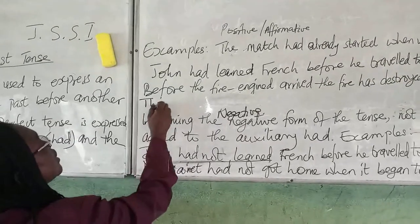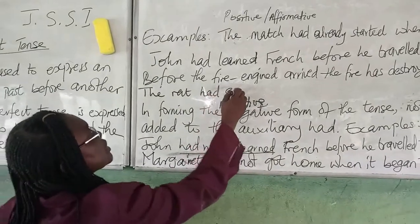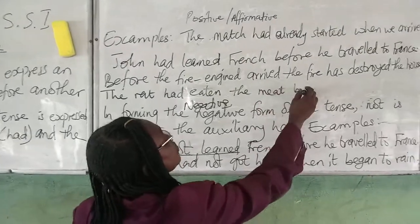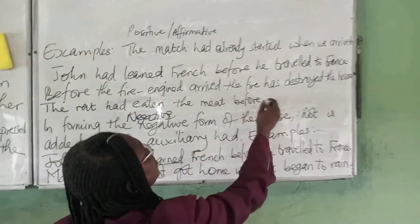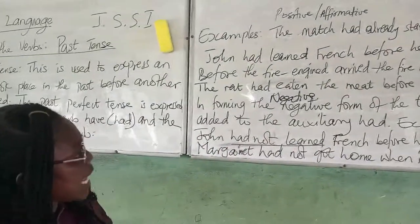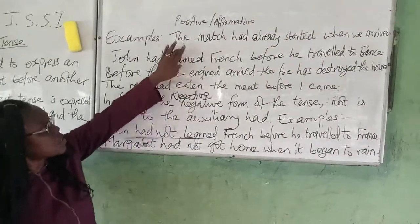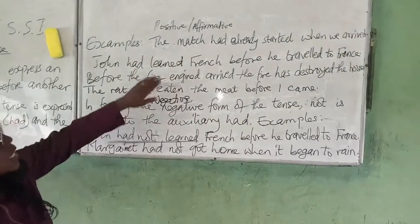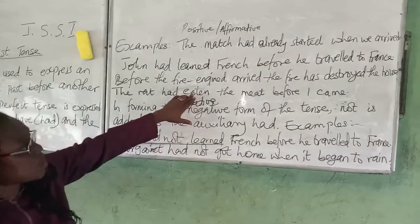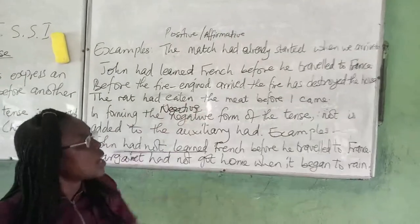Another example: 'The rats had eaten the meat before I came.' I purposely added this example so that you know that irregular verbs can also be used here — not just regular verbs that add -ed. So 'eaten' is an irregular past participle. That's why I have: 'The rats had eaten the meat before I came.'